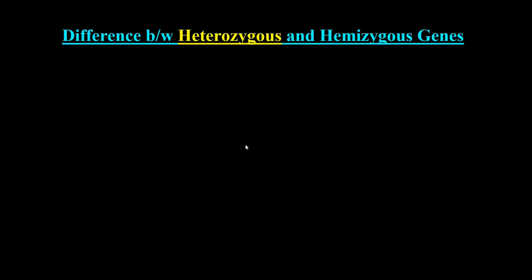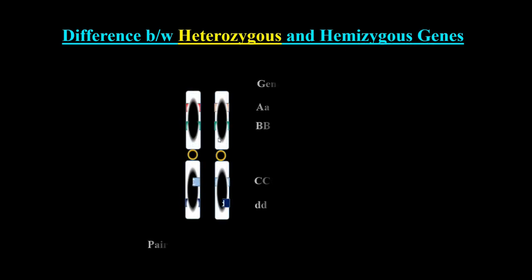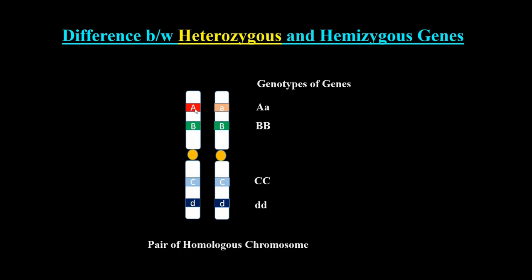In this lecture we will discuss the difference between the heterozygous and hemizygous conditions of genes. This is a chromosome here, and these are different genes that are located on this chromosome — gene 1, gene 2, gene 3, and gene 4.